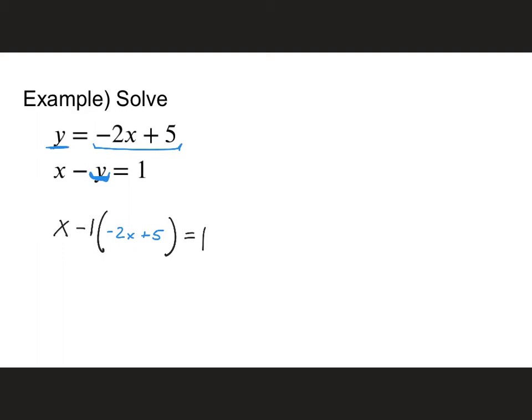Now what do I do? Now I just solve this for x. I'm going to distribute through my negative sign. That will give me x and that will give me plus 2x minus 5 and equals 1. I will then combine my like terms. So I have 3x minus 5 equals 1. Now I will add my 5 to both sides, so plus 5 to both sides. That will give me 6 over here. So I have 3x equals 6.